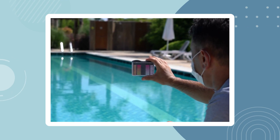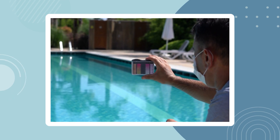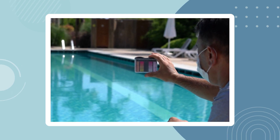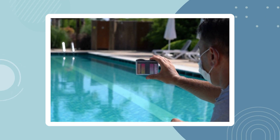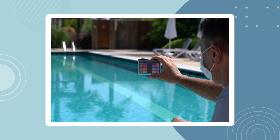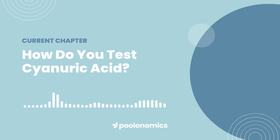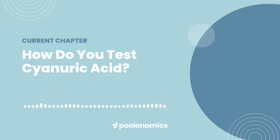Liquid drop kits require a sample from your pool before adding a reagent to colour the water. While this is slower and more involved, it's considerably more accurate than using strips. However, cyanuric acid can also be measured using the black dot test, which is even more precise. Some liquid test kits will include the black dot test as standard, but you may need to buy it separately.